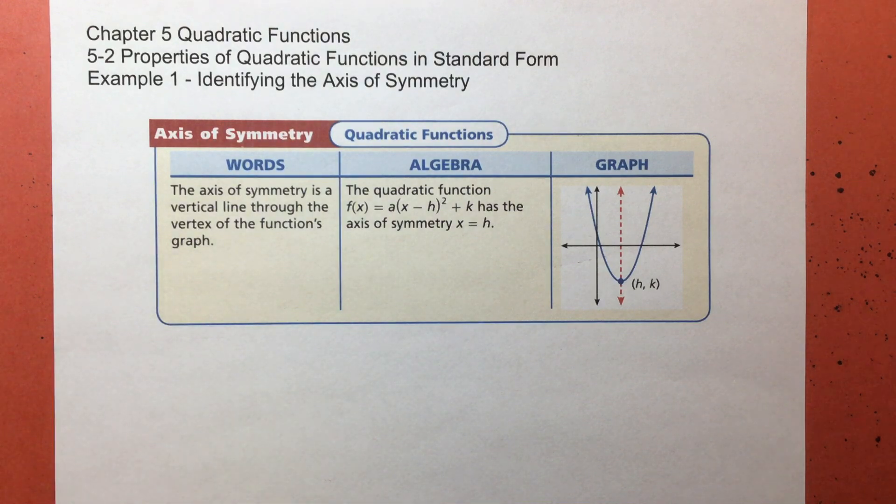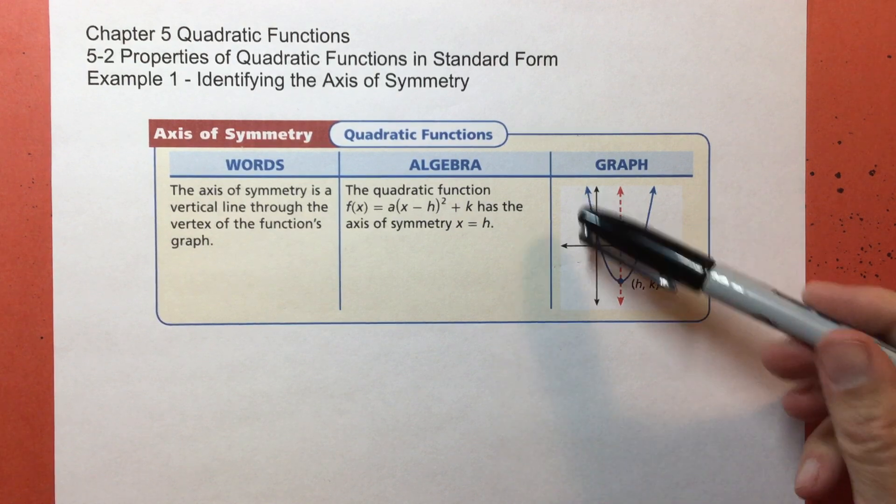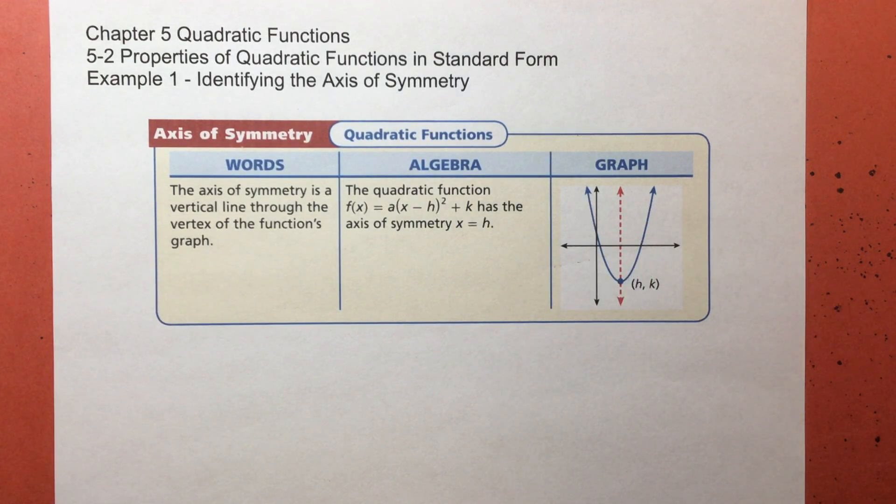But really, that's kind of misleading, because what we're really going to be talking about are properties of the graph of the function. You remember from the previous videos we talked about the fact that the graph has a special shape called a parabola.